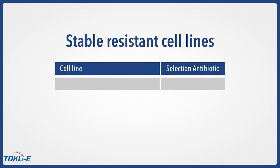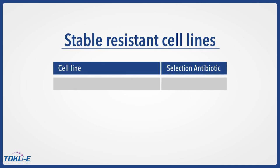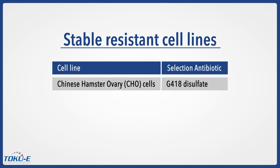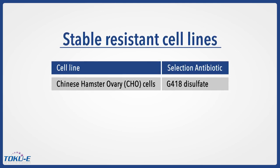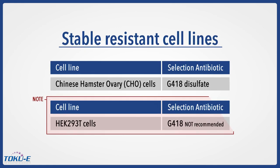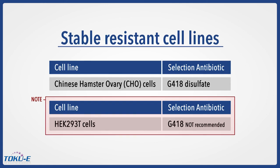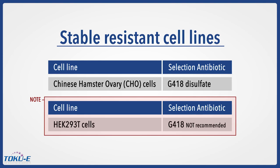Before we begin, it is crucial to know the characteristics of the cell line you want to transfect, to be sure that the selection antibiotic will work on your cell line. In these videos, we will be using CHO cells and the selection antibiotic G418 disulfate. It is important to note that commonly used HEK293T cell lines are resistant to G418 due to the presence of a neomycin resistance gene introduced during immortalization of HEK cells.